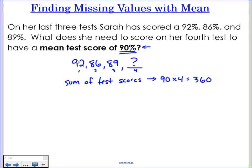Take the quantity of numbers that you have, even though we don't know one of them, I have four numbers, multiply your mean by the number that you have. So I do 90 times four, get 360. Okay. So that means that 92 plus 86 plus 89 plus something, I'm just going to call x, needs to equal 360.